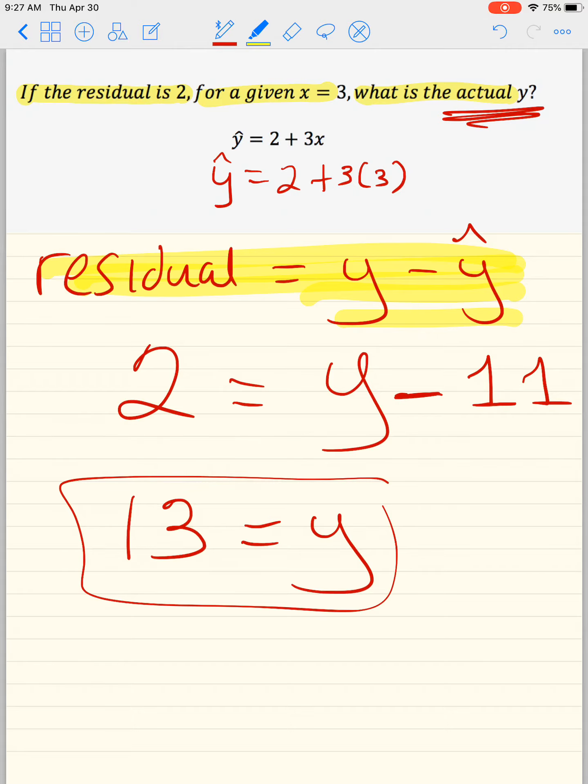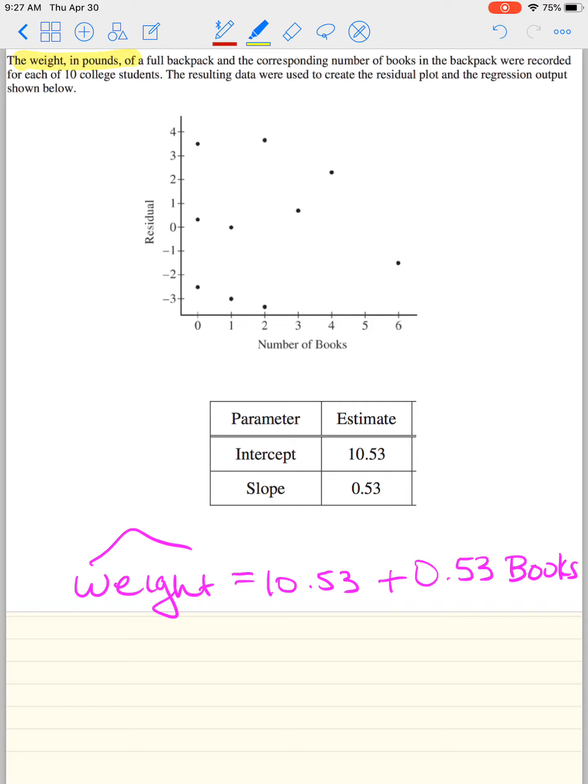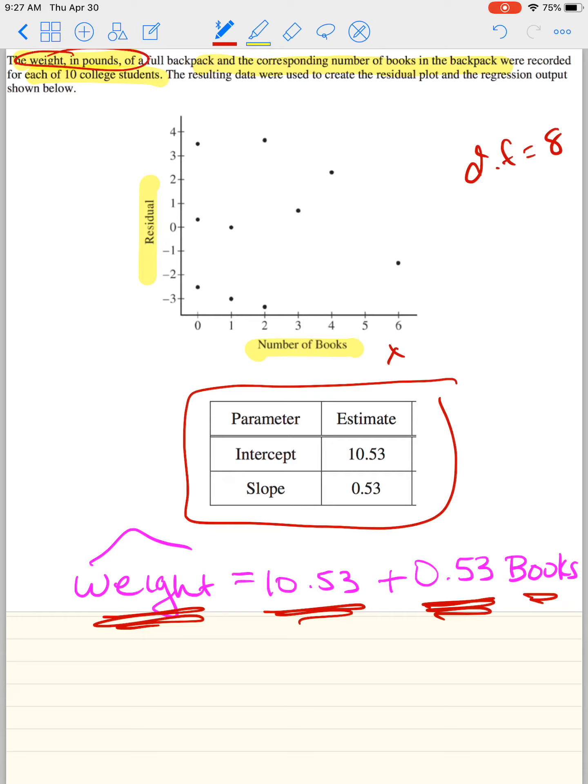So let's try an AP question. The weight in pounds of a full backpack and the corresponding number of books in the backpack were recorded for each of 10 college students. Once again, degrees of freedom, if we were going to do that, would be 8. The resulting data were used to create the residual plot. So this is what the residual plot looks like. You can tell residual and x is the number of books. The resulting data were used to create the residual plot and the regression output is shown below. They gave you this on the AP and I just created the line of best fit for you. The slope is 0.53, the y-intercept is 10.53. I need parameters, books and weight. Remember books is x, weight I got from up here.